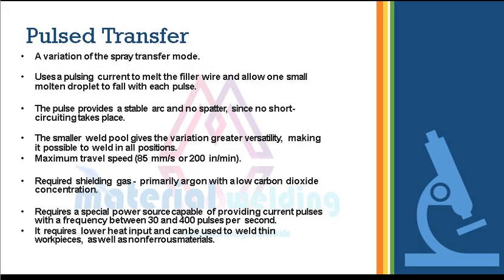Pulsed transfer mode is a variation of the spray transfer mode. It uses a pulsing current to melt the filler wire and allow one small molten droplet to fall with each pulse. The pulse provides a stable arc and no spatter, since no short circuiting takes place. The smaller weld pool gives greater versatility, making it possible to weld in all positions. Maximum travel speed is 85 mm/s (200 in/min). This mode requires shielding gas — primarily argon with low CO2 concentration — and a special power source providing current pulses at 30 to 400 pulses per second. It requires lower heat input and can be used to weld thin workpieces as well as non-ferrous materials.